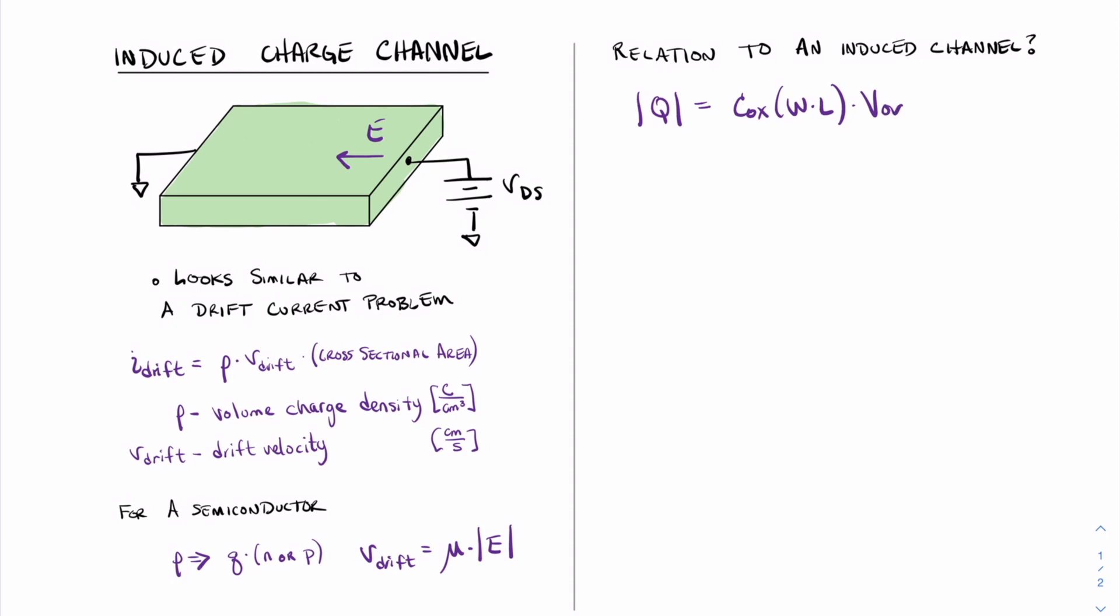In this case, though, we actually want to make this value, Q, independent of the length L. And so therefore, we're going to move L over to the left side.